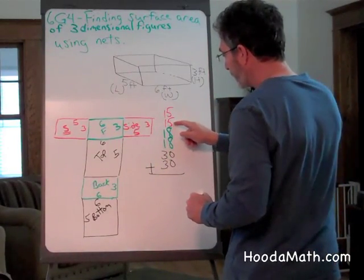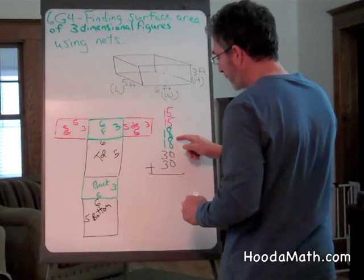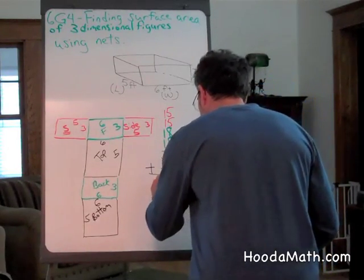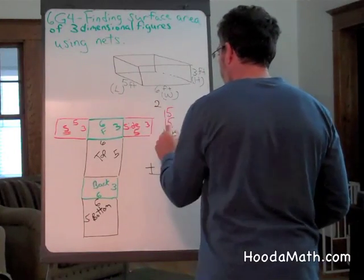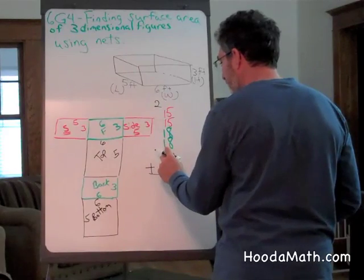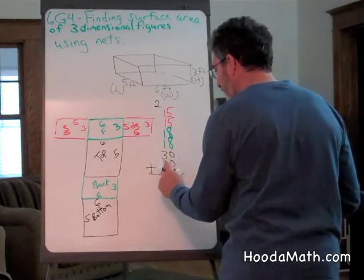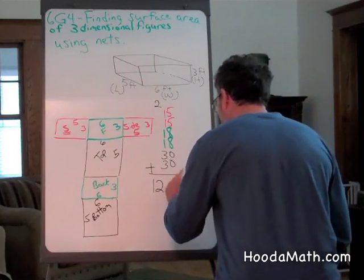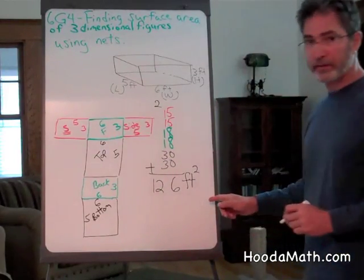Five plus five is 10, plus eight is 18, plus eight is 26. Three, four, five, six. And three is nine, and three is 12. 126 square feet, because we're talking about area.